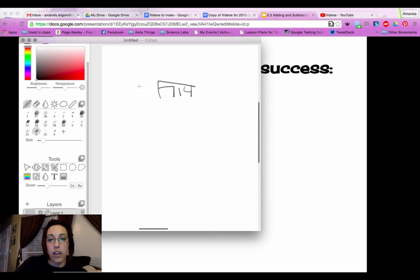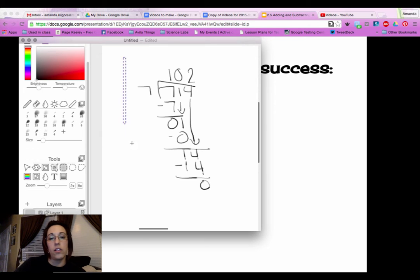714 divided by 7. Well, 7 will go into 7 one time. 1 times 7 is 7. Bring the 1 down. But 7 won't go into 1, so we need a 0. Bring the 4 down. 7 will go into 14 two times. 2 times 7 is 14 exactly, with no remainder.